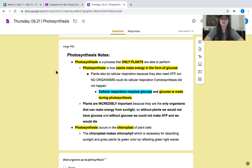Cellular respiration requires glucose and glucose is made during photosynthesis. So plants are incredibly important because they are the only organisms that can make energy from sunlight. So without plants, we would not have glucose and without glucose, we would not make ATP and we would die. Photosynthesis occurs in the chloroplast of plant cells. The chloroplast makes chlorophyll, which is necessary for absorbing sunlight and gives plants its green color by reflecting green light waves.